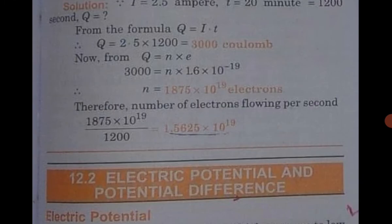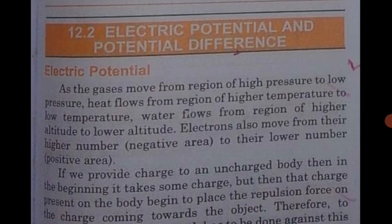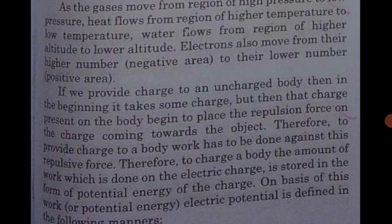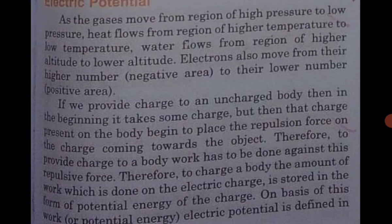The next topic is electric potential or potential difference. First, what is electric potential? The electric condition which determines the flow of charge from one conductor to another kept in contact is known as electric potential. I repeat: the electric condition which determines the flow of charge from one conductor to another kept in contact is known as electric potential.